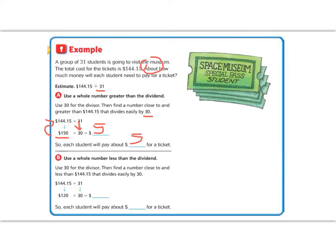All right, B says use a whole number less than the dividend. Okay, so now look, we kept 31 rounding to 30. But now instead of rounding up, 144 has rounded to 120. And still think of your multiples of 3: 3, 6, 9, 12.